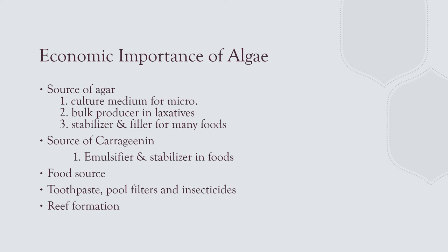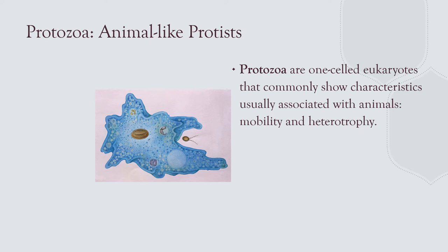Algae is very important: agar comes from it for microbiology; laxatives and food fillers; gels for hair gel and toothpaste; pool filters use algae. The silica of diatoms helps scrape plaque off your teeth. Diatom silica skeletons are also used as insecticides — insects breathe through spiracles and the silica cuts them up and kills them. Farmers spread them in chicken coops to control insects. We eat algae in sushi, and algae is important in coral reefs as the base of the food chain.